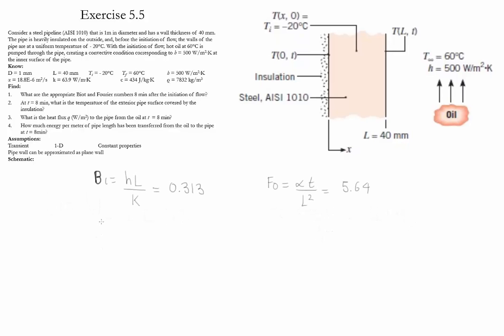Since the Biot number is greater than 0.1, we are not allowed to use lumped capacitance method. Therefore, we have to use the analytical solution. However, since the Biot number is greater than 0.2, we could use the approximation in which we only use the first term of the summation.